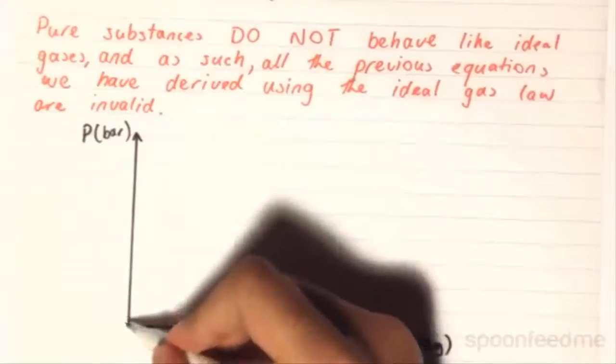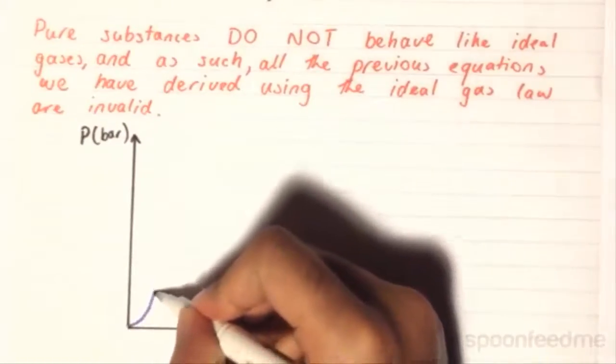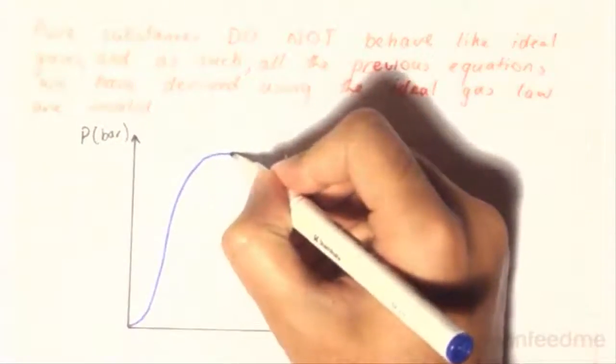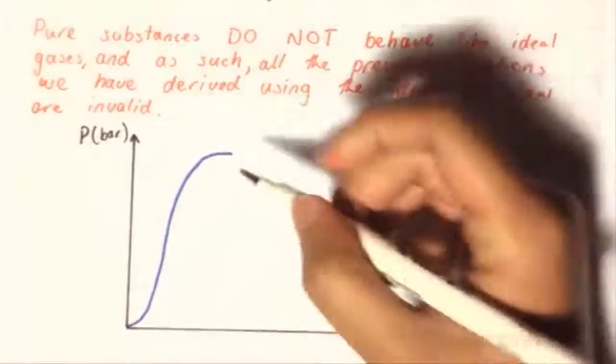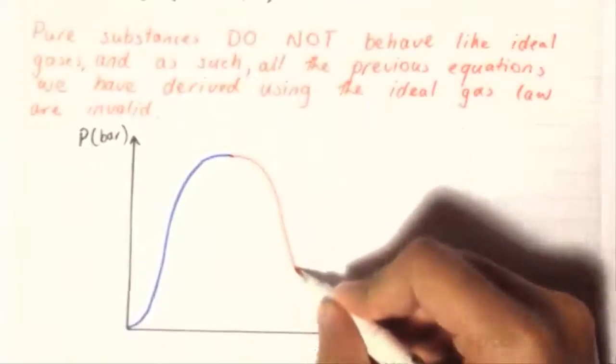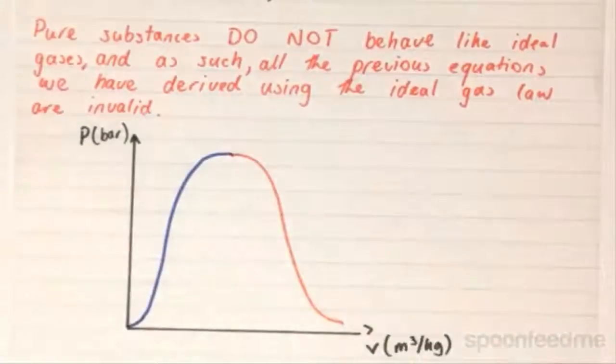So, the PV diagram looks as follows. A key difference between substances such as water and other ideal gases such as air is that when working on thermodynamic problems, water can exist in the liquid state and the gaseous, or the vapor state.